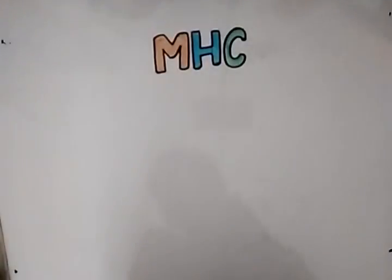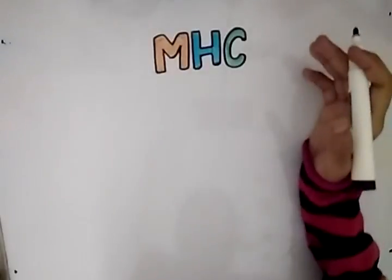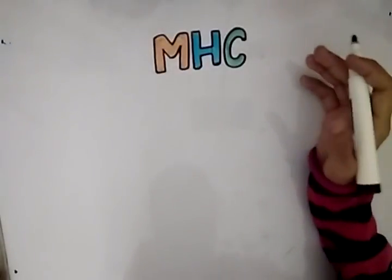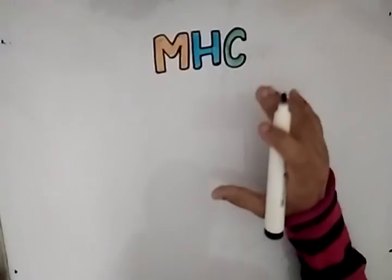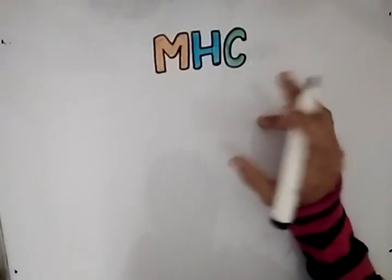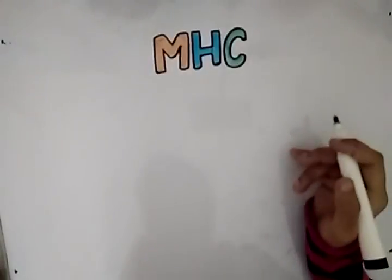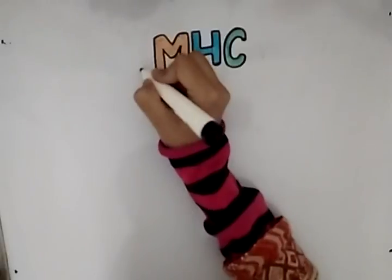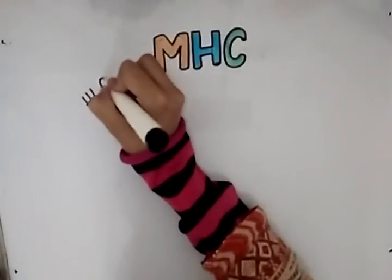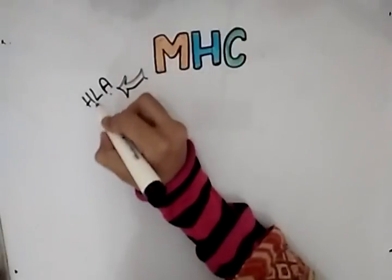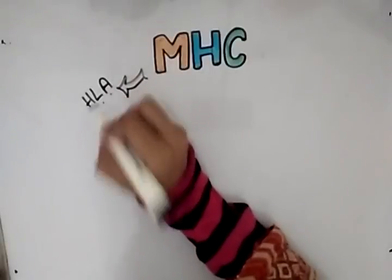Assalamu alaikum. Bismillah ar-Rahman ar-Rahim. Today's topic is MHC complex. MHC proteins are basically proteins or antigens present on the surface of human and mammalian cells. These are recognized by the leukocytes, and they are also called the human leukocyte antigens — the antigens that are recognized by leukocytes.